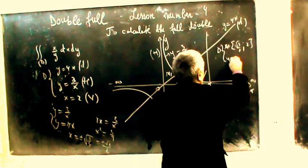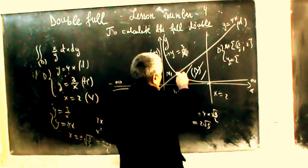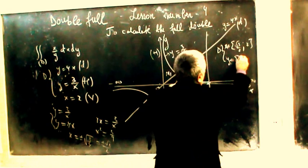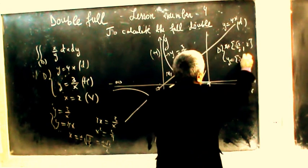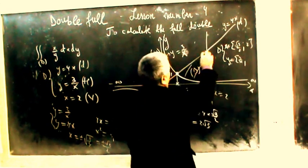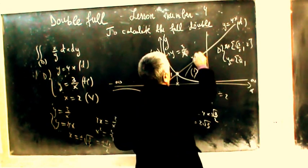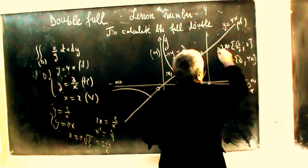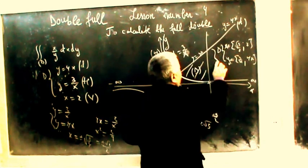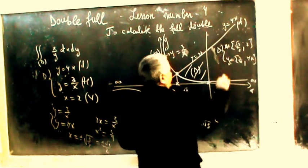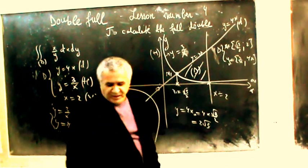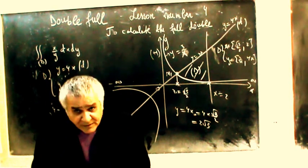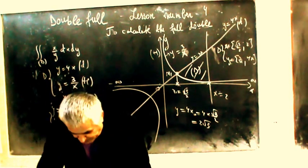For the integration domain: y-minimum equals 3 divided by x, and y-maximum equals 4x. The divided domain integration uses a rectangle of variable height.